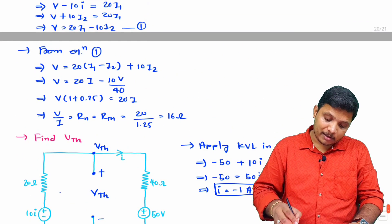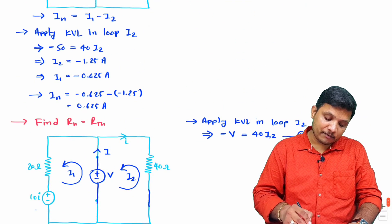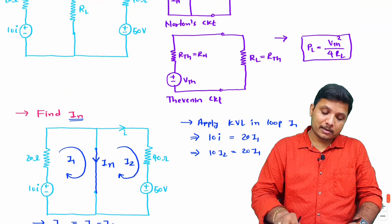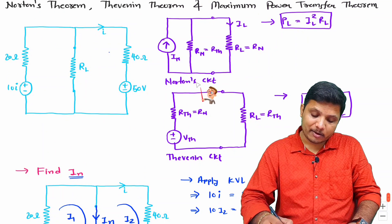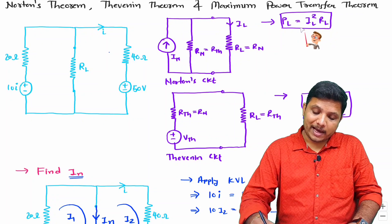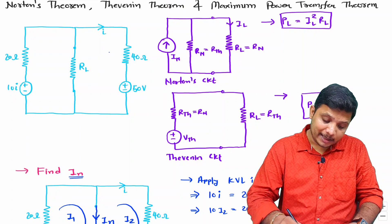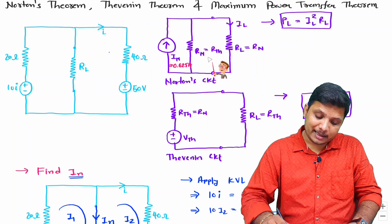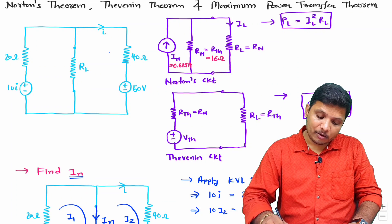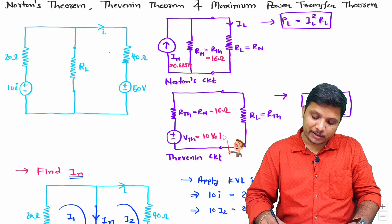We have now calculated all values: I_n equals 0.625 amperes, R_n and R_th equal 16 Ω, and V_th equals 10 V.